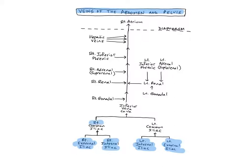The right and left common iliac veins are deep veins formed by the union of the internal and external iliac veins near the sacroiliac joints to form the inferior vena cava. Beginning near the fifth lumbar vertebra, the common iliacs drain the pelvis, external genitals, and lower limbs.